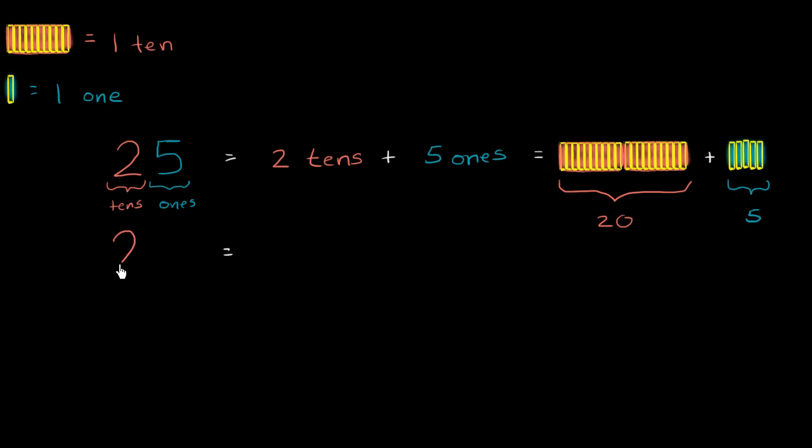twenty - let me write this down - twenty-five. You could view it this way because this two is two tens, that represents twenty, plus the five ones.